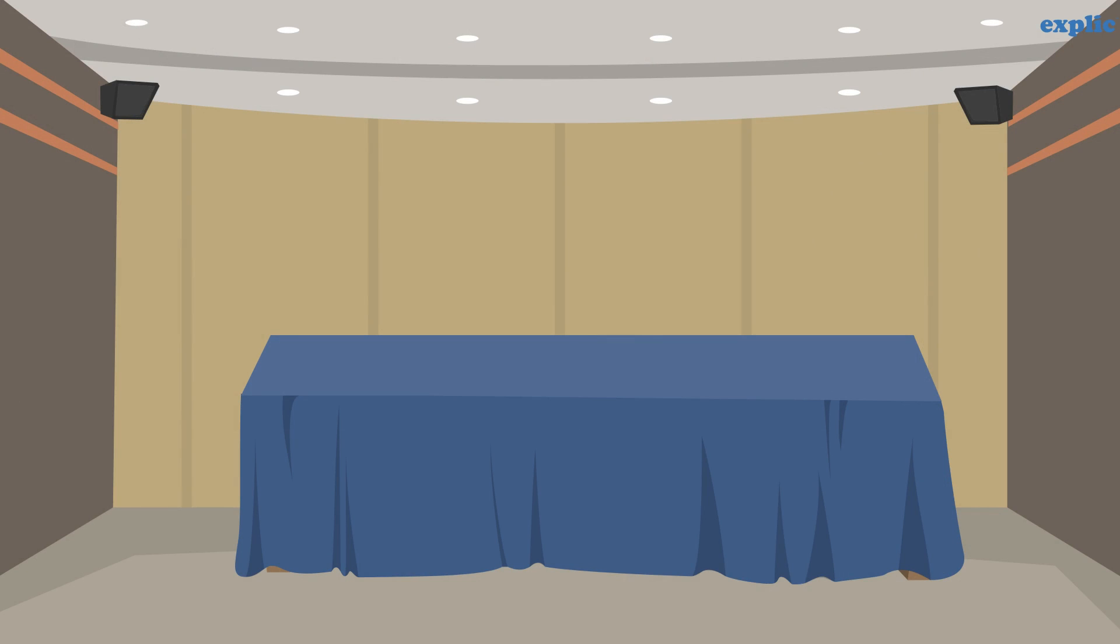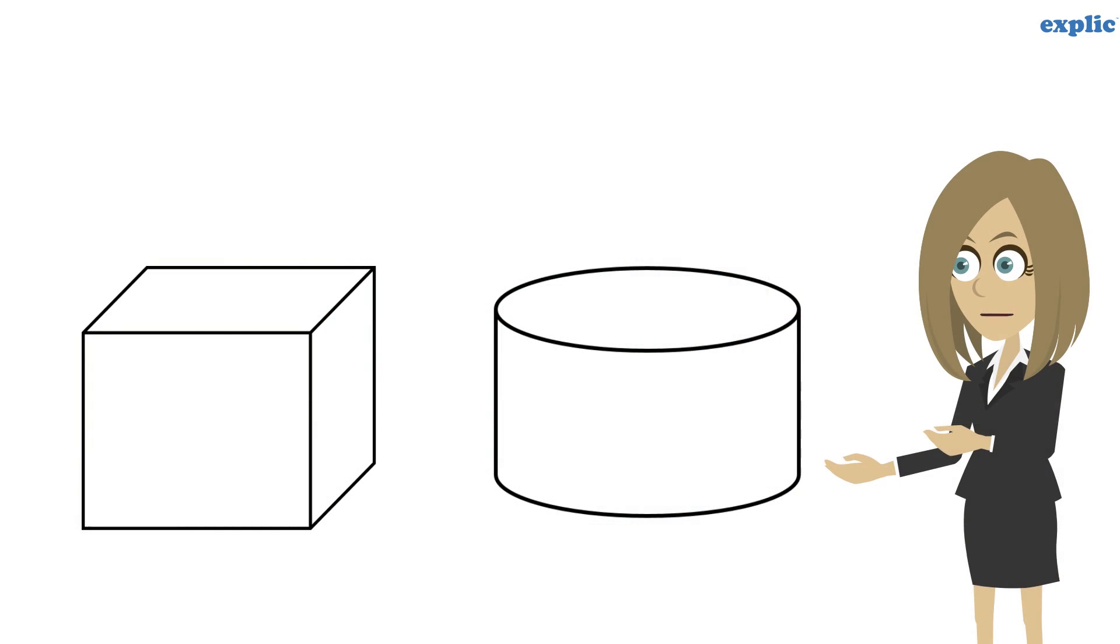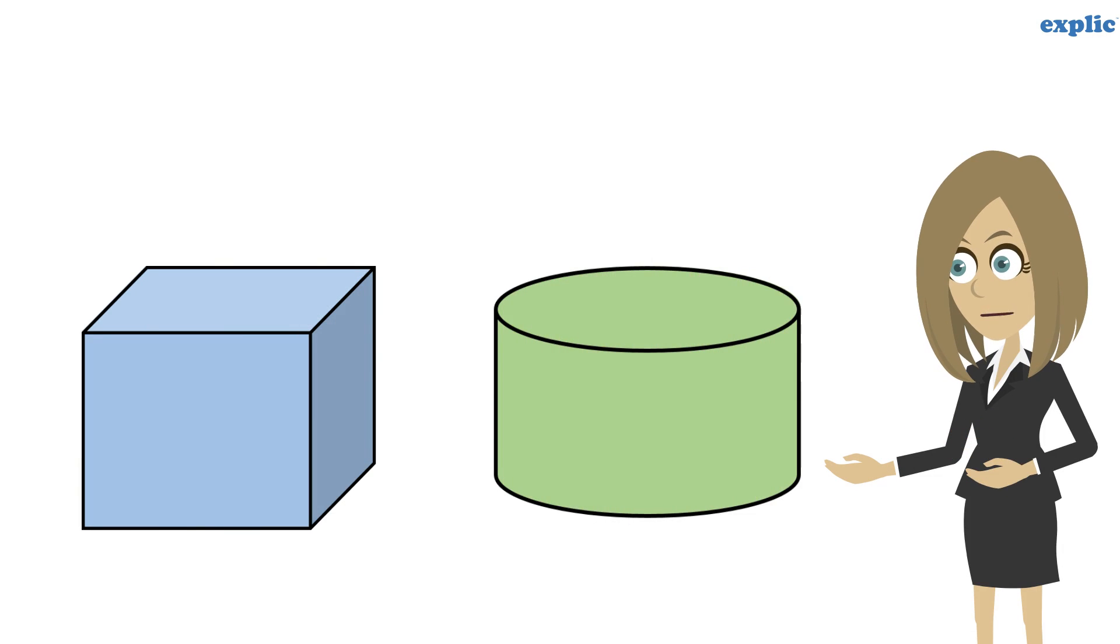Have you ever wondered how much cloth do you need to cover a cabinet or how much paint is required to color a box? The area of the cloth or amount of paint required depends upon the area of the outer surface of the object which is called surface area.